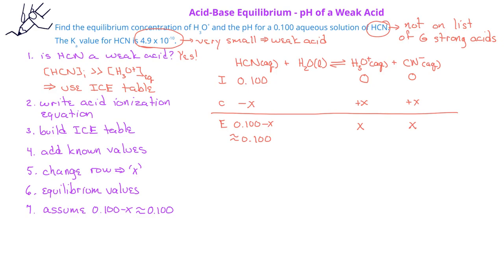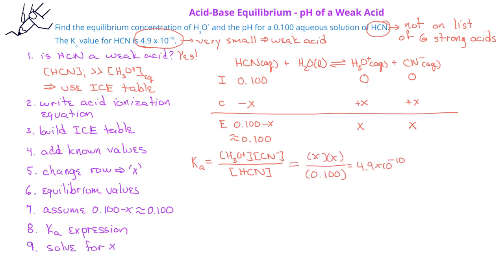At the end of the problem, we'll have to check this assumption. Now that we have the equilibrium values for the reactants and the products, we can write the acid ionization constant expression. In this case, Ka equals the concentration of the hydronium ion times the concentration of the cyanide ion divided by the concentration of HCN.